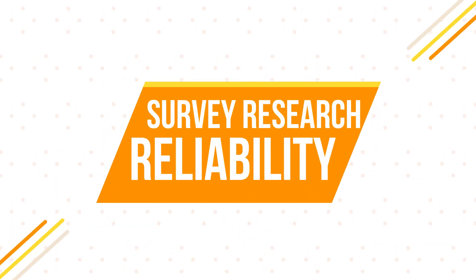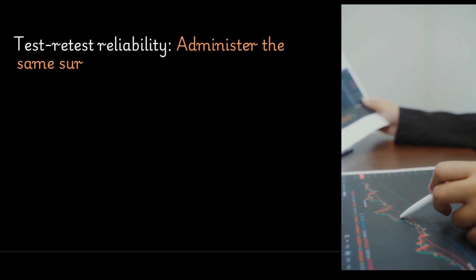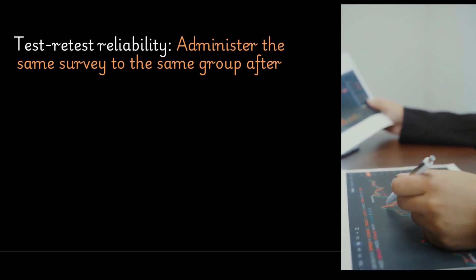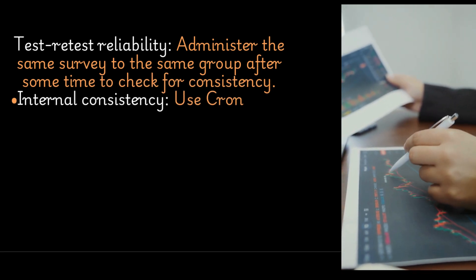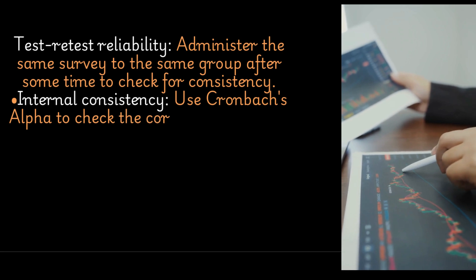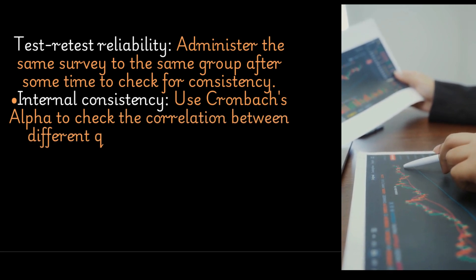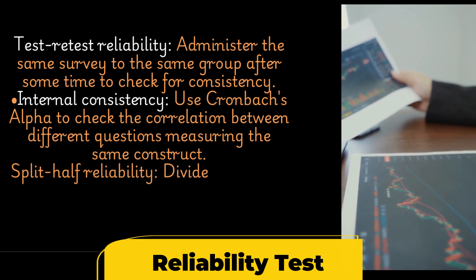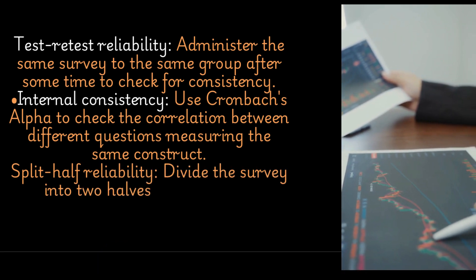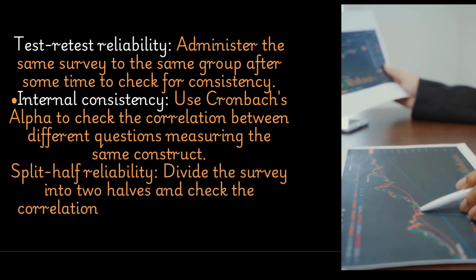Reliability is about whether the survey produces consistent results over time and across different conditions. Test-retest reliability involves administering the same survey to the same group after some time to check for consistency. Use Cronbach's alpha to check the correlation between different questions measuring the same construct. Split-half reliability involves dividing the survey into two halves and checking the correlation between the results from each half.